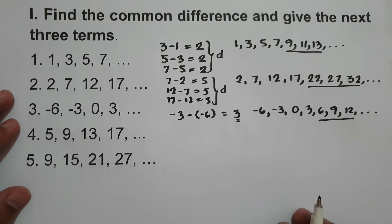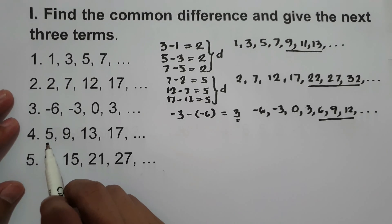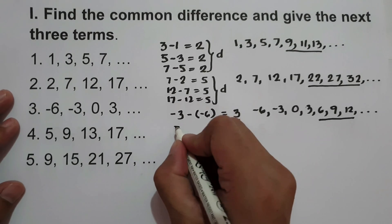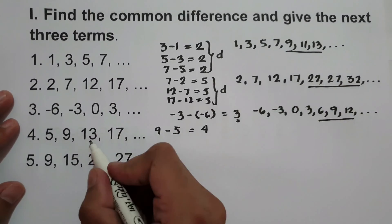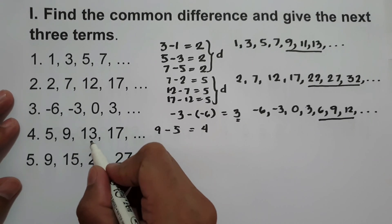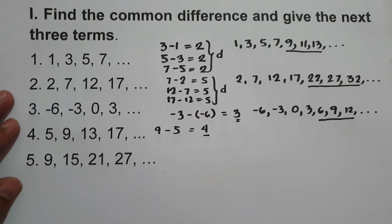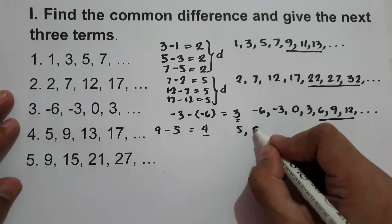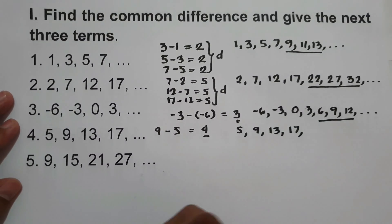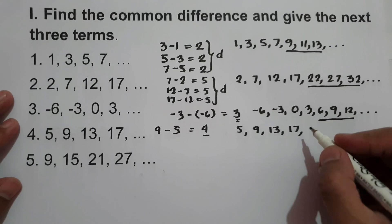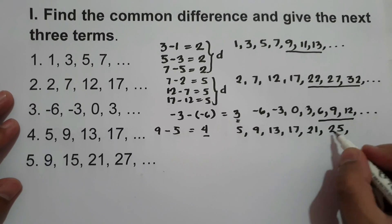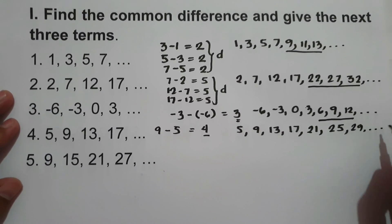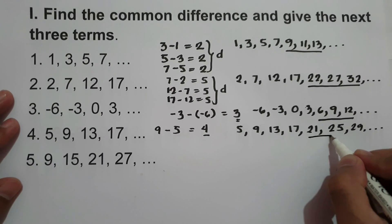What about number 4? Go ahead and find the common difference and give the next three terms. We have 5, 9, 13, 17. So 9 minus 5 is 4, 13 minus 9 is also 4, and 17 minus 13 is also 4. The common difference is 4. The next three terms are: 17 plus 4 is 21, 21 plus 4 is 25, and 25 plus 4 is 29. Therefore, the next three terms are 21, 25, and 29.